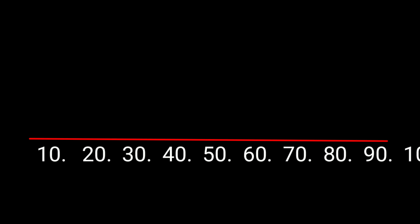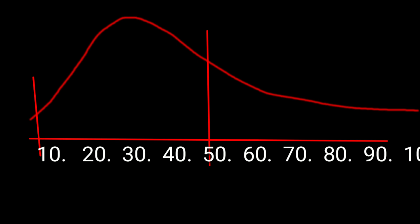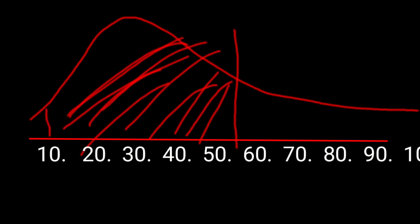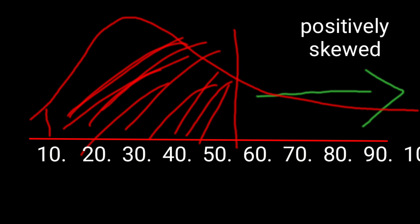But is data always normally distributed? Consider income distribution per month, ranging from 10,000 to 1 lakh rupees. After collecting data, almost all employees earn around 10,000 to 50,000 per month — very few earn less than 10,000 or more than 50,000. The central value is approximately 50,000, and we see a long tail on the right side. Since the tail is in the positive side of the central value, this distribution is called positively skewed.